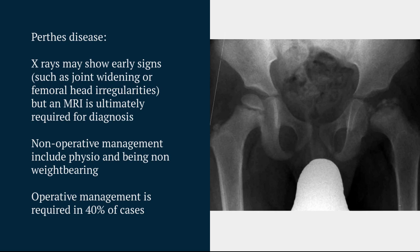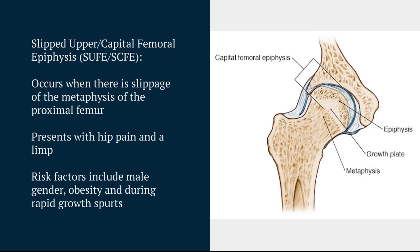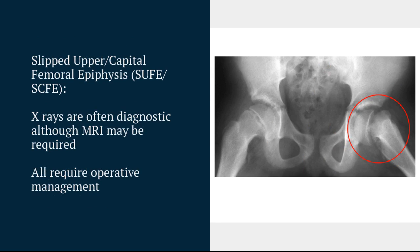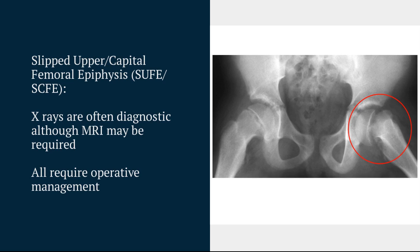Finally, we're going to talk about a slipped upper femoral epiphysis, which occurs when the metaphysis of the proximal femur slips, and this will result in hip pain and a limp. Key risk factors include being male, high body weight, and we often see it in puberty during rapid growth spurts. This diagnosis is predominantly made via x-ray, and all cases of SUFE are going to require operative fixation.